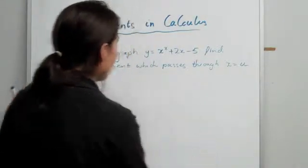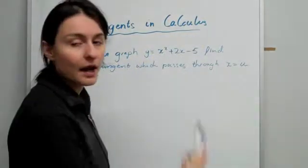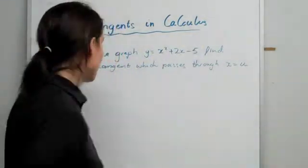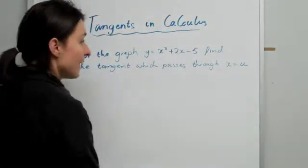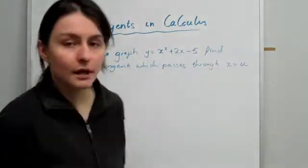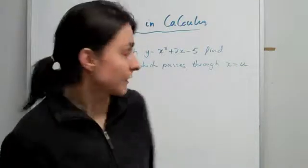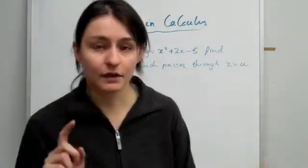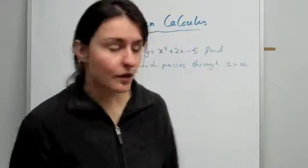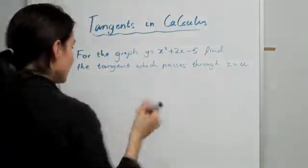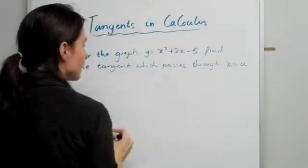Okay, now let's have a look at this particular question. It says, for the graph of this, I've given you a certain graph, and I want you to find the tangent which passes through the value of x equal to u. Now, the moment you see an unknown, it's going to be a little bit more complicated. But the moment you see that you only have an x value, you immediately should start looking for a y value. Even though you don't have a number there, that doesn't stop you from being able to find a y term, a y value in terms of u.